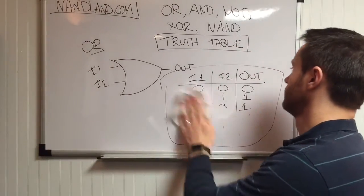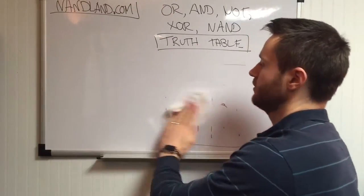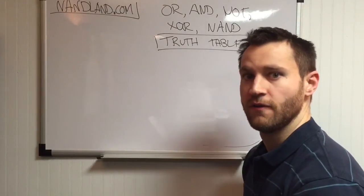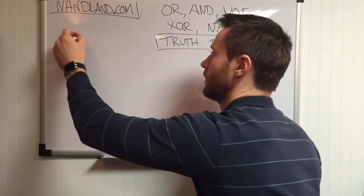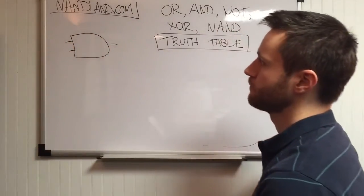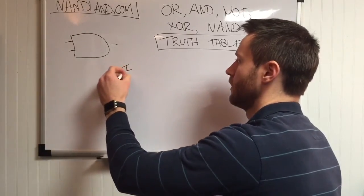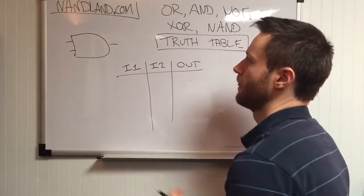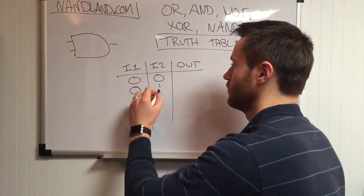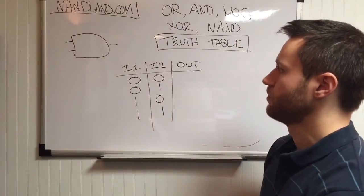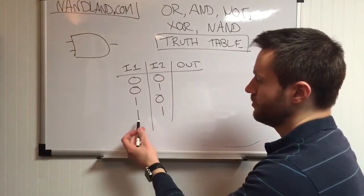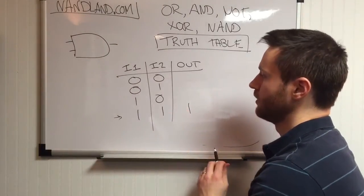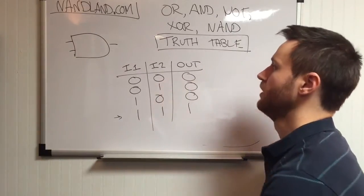Next, AND gate. An AND gate means that both of your inputs need to be one for the output to be one. Drawing the truth table with inputs I1 and I2: the combinations are 00, 01, 10, and 11. Both inputs need to be a one for the output to be a one. The only combination where that occurs is the last one — 1,1 — so only that row has an output of one. For every other combination of inputs, the output is zero. That is an AND gate.